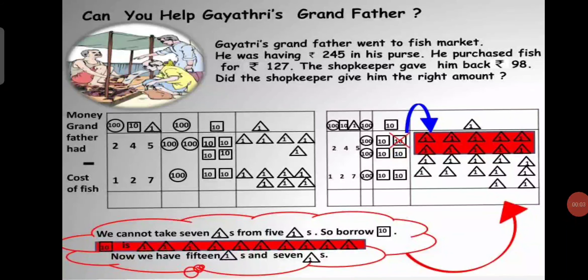We have one more activity. Can you help Gayatri's grandfather? Gayatri's grandfather went to the fish market. He was having rupees 245 in his purse. He purchased fish for rupees 127. The shopkeeper gave him back rupees 98. Did the shopkeeper give him the right amount?